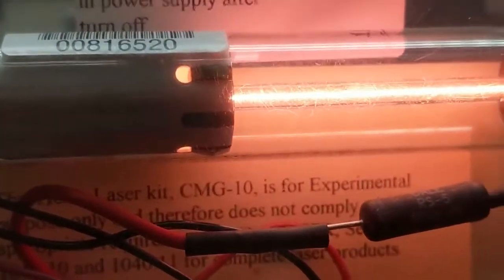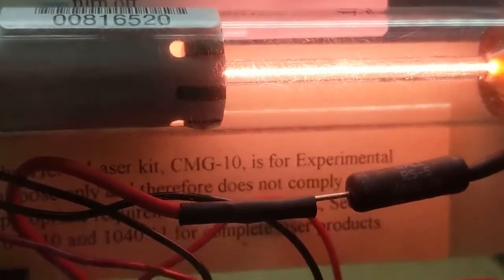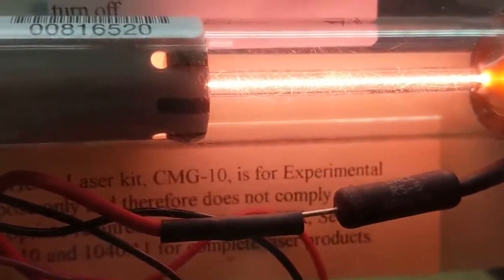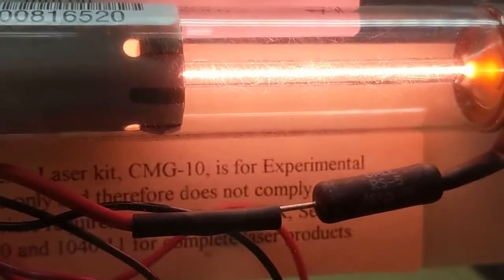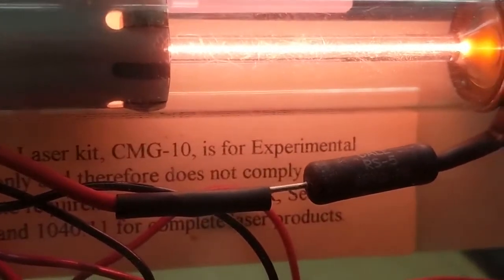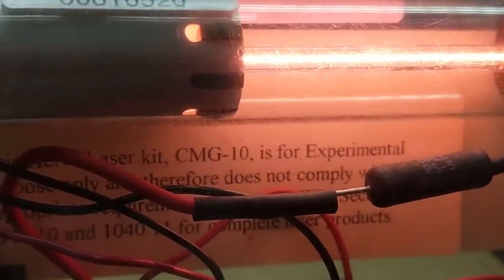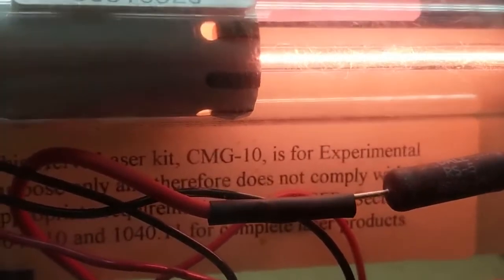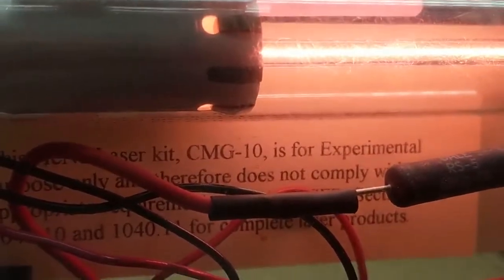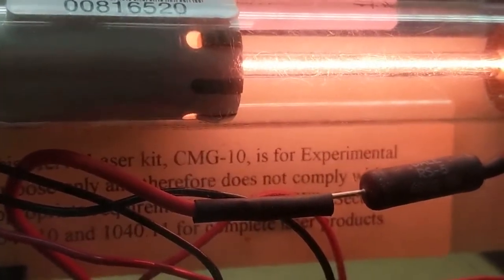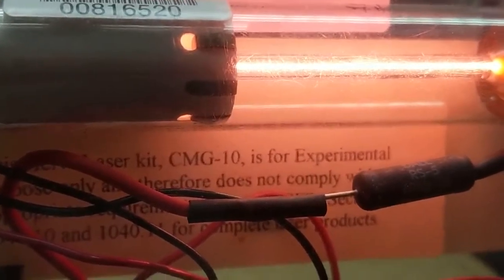That tube has got a partial vacuum. It's relatively low pressure gas inside of there. That makes it easier to create the cascade that's necessary to create that plasma. If you think about from physics 106, how lightning is created through a cascade of pulling one electron off of an atom.